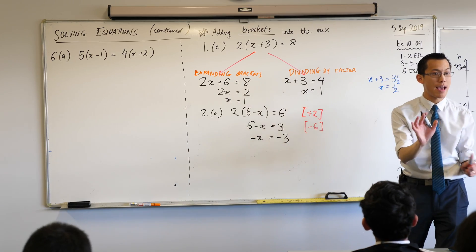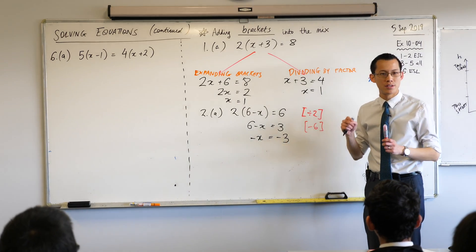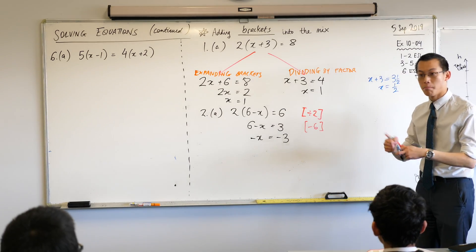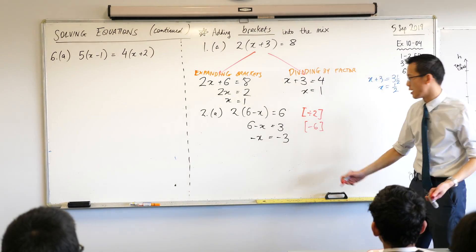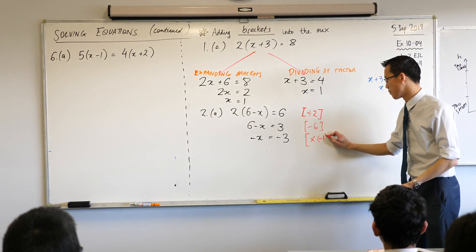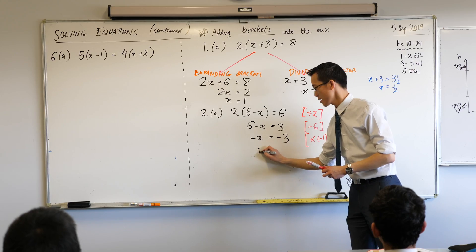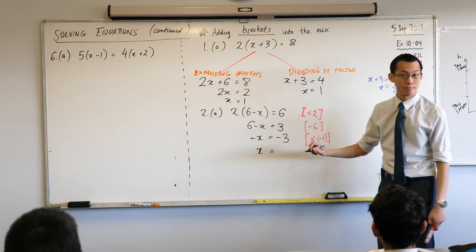So I've got two negatives flying around here and so I want to get rid of both of them. What should I do to both sides? I should multiply or divide, they both do the same thing. I'm going to multiply both sides by negative 1. That turns the negative x into just x and it turns the negative 3 into 3.